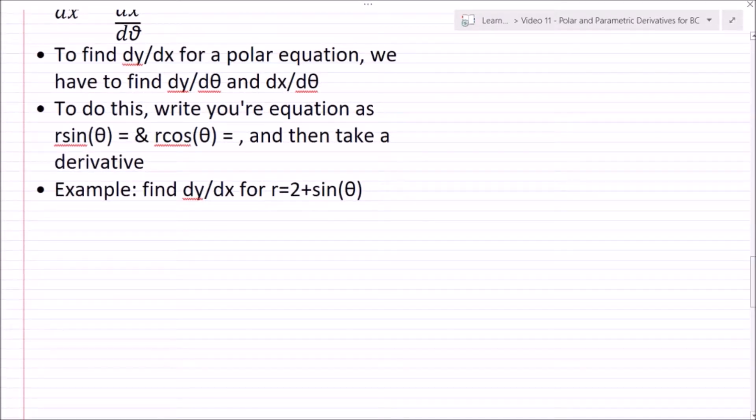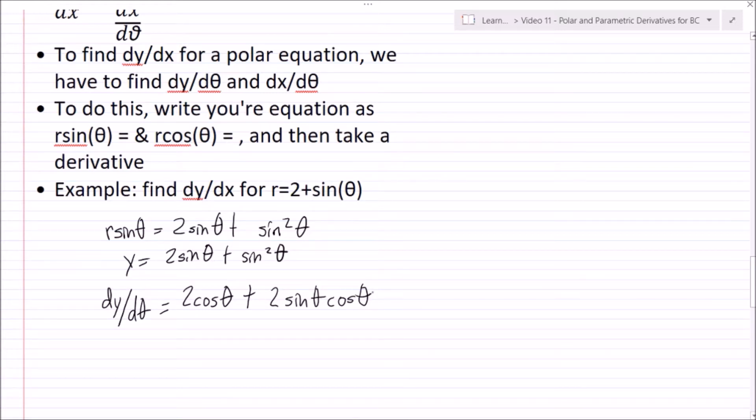So for example, find dy/dx for r = 2 + sin(θ). So here, I'm going to multiply both sides by sin(θ). And I'll get r sin(θ) equals 2 sin(θ) plus sin²(θ). And now I'll take my derivative, I'll actually write it as y equals first, just to make this a little more clear. And now I can find dy/dθ. And so here, derivative of sine is cosine. And then here, I have to do the chain rule: 2 sin(θ) cos(θ).